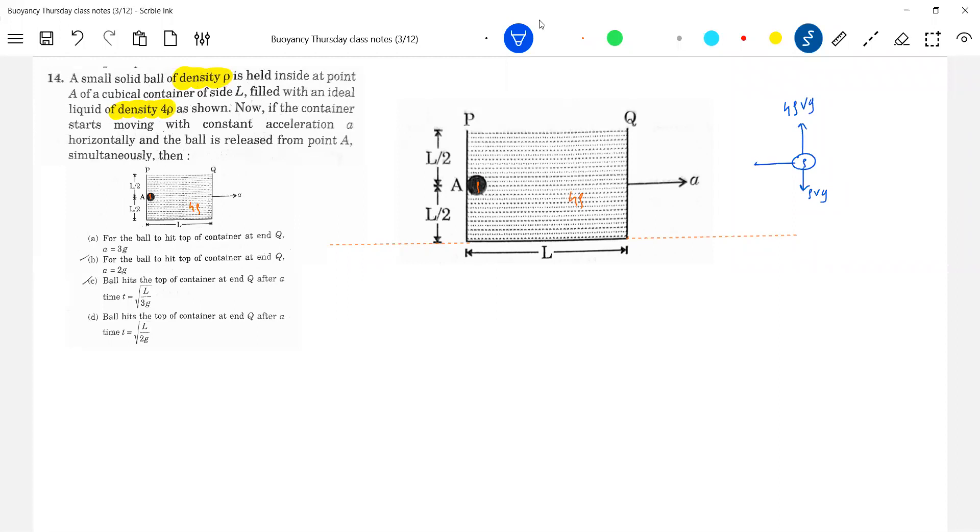Then pseudo force, pseudo force how much should be M into A. So what is the mass? Rho V into A. Then effective buoyant force, so that should also act 4 rho Vg.